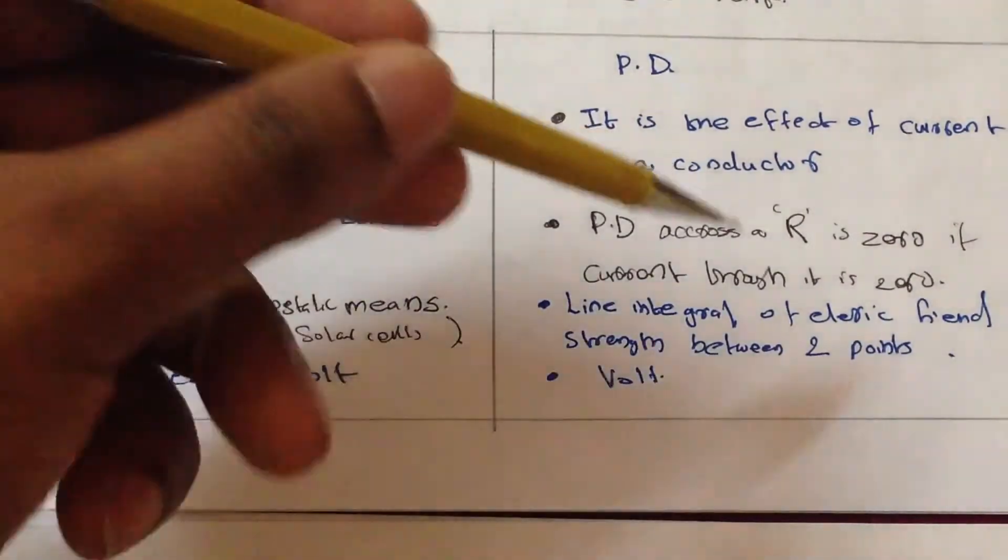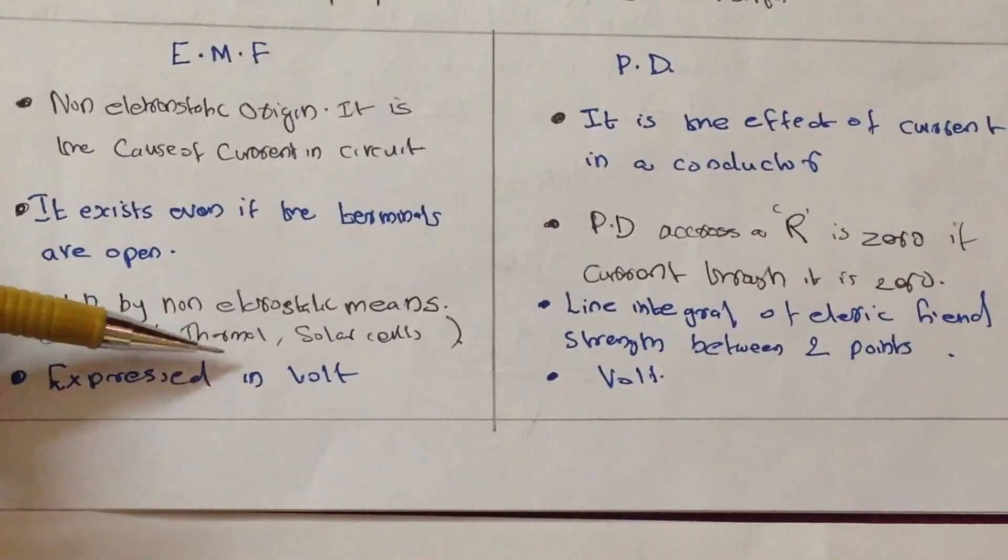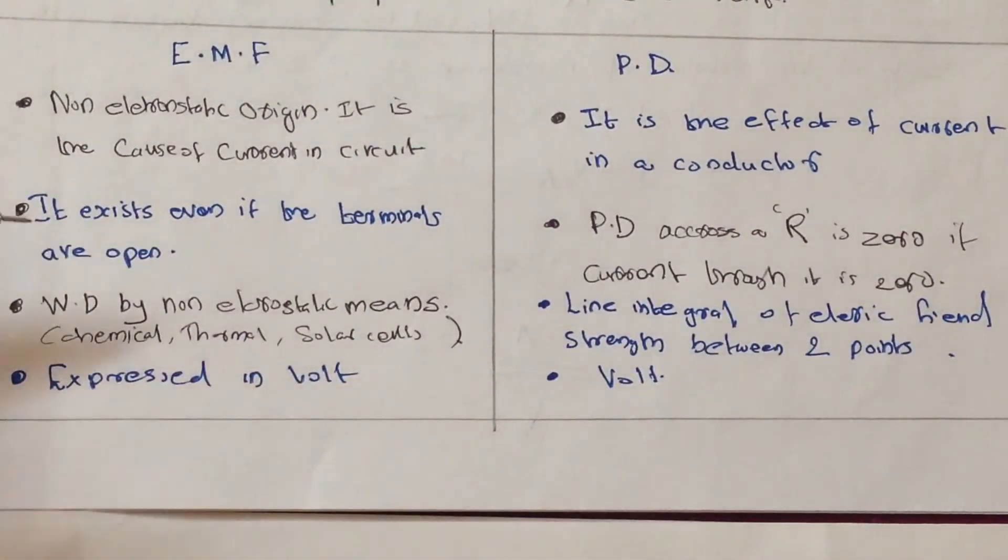Work done by non-electrostatic means: chemical, thermal, or solar cells. Because in this thing, the EMF is generated by these things like chemical reaction, thermal, and solar cells. So it is non-electrostatic in origin.